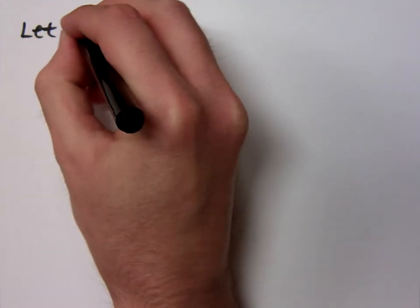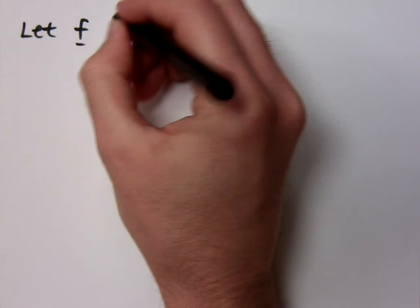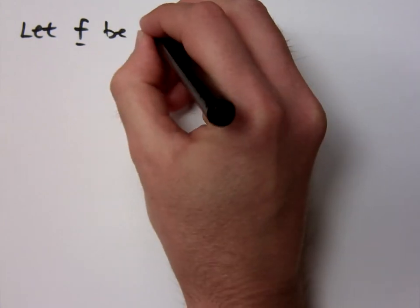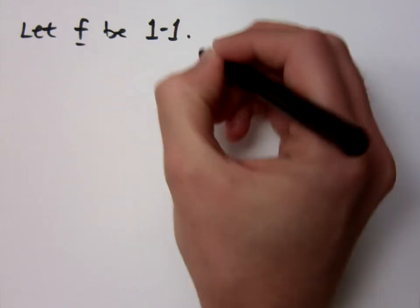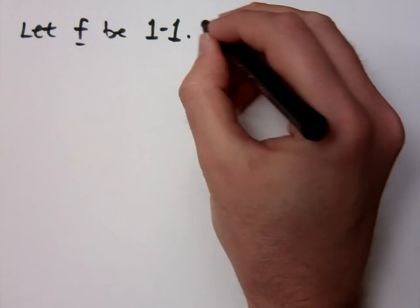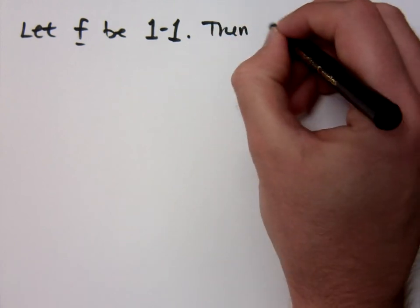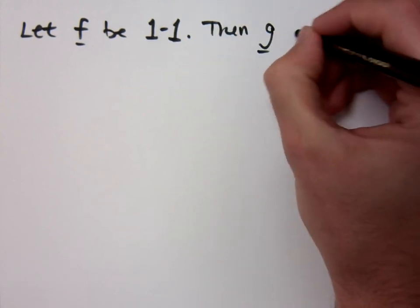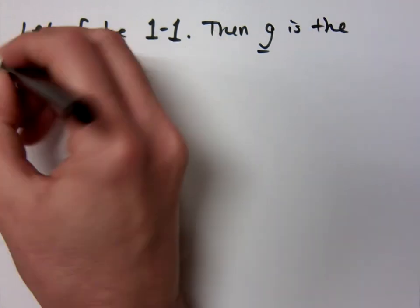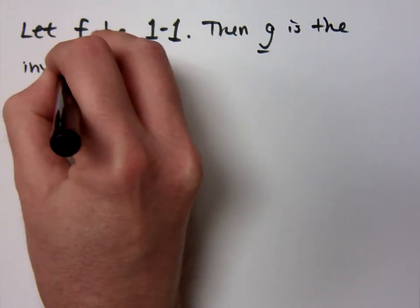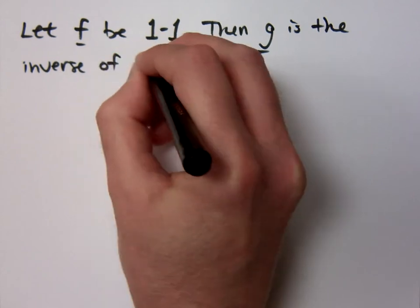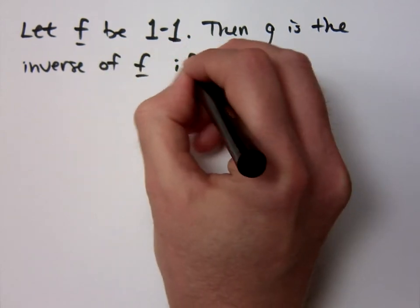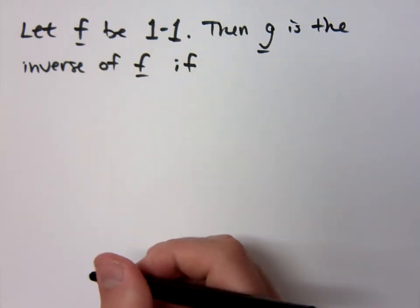So here's what we're going to say, just so you have some information here. We're going to let f be one-to-one. Let it be a one-to-one function. Then the function g is the inverse of the function f, if you've got the following.